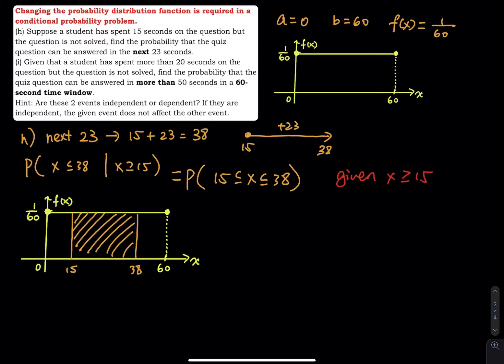X greater than or equal to 15. That means I already know that the minimum is 15 or above. It's no longer 0 or above. So that means you have to change the PDF.